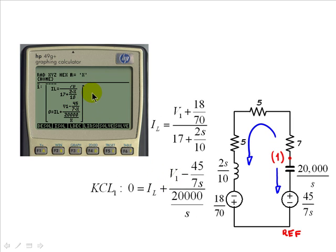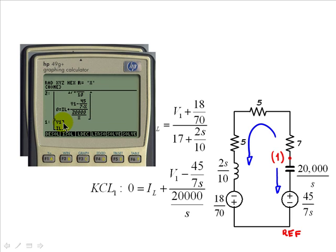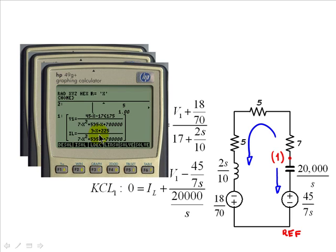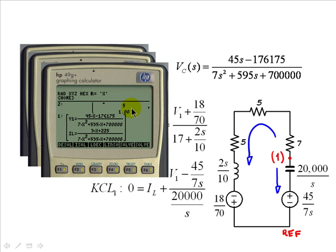We press the linear solver and those are the two solutions: VC and IL in the Laplace domain. Note that X is the independent variable and represents the S Laplace variable in the calculator — I chose X because it is easier to type. Let me copy those two values: this is VC, which equals V1, and this is the current in the inductor.